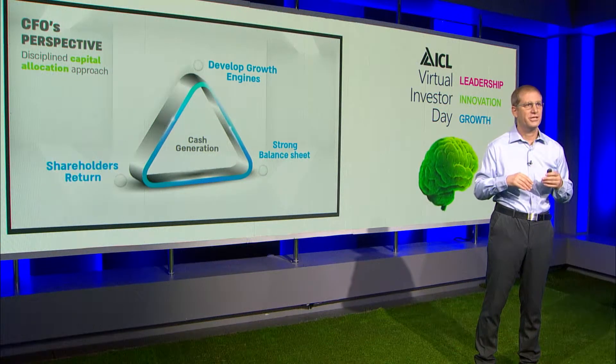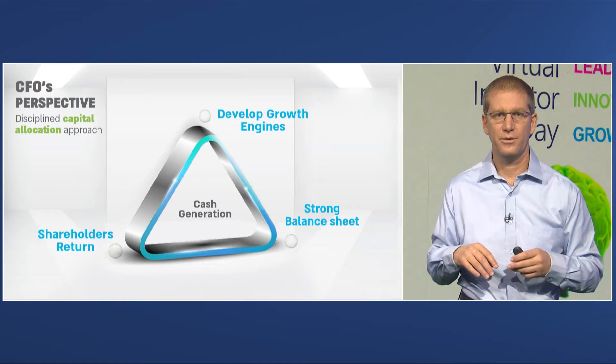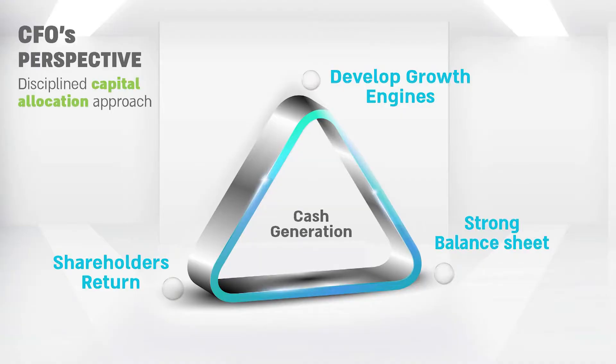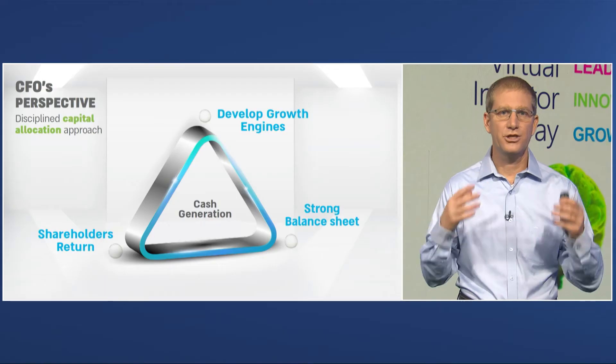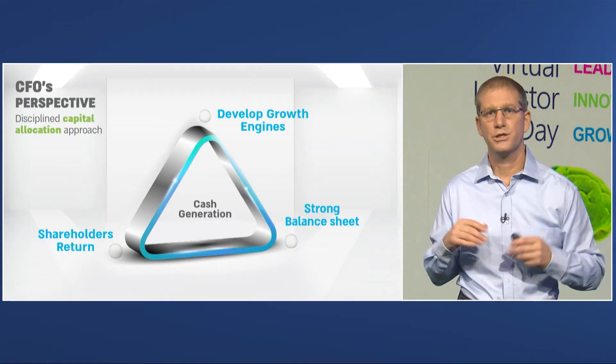After we generate the cash, we look at the capital allocation. Here, we are constantly optimizing between three angles of a triangle. The first angle is to secure the future growth engines of the company to ensure the company will continue to prosper.